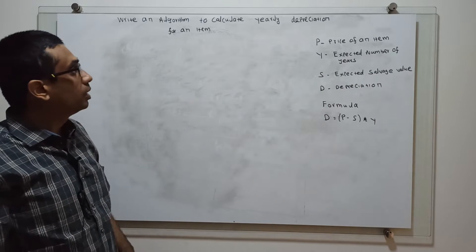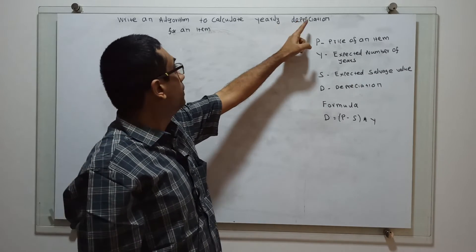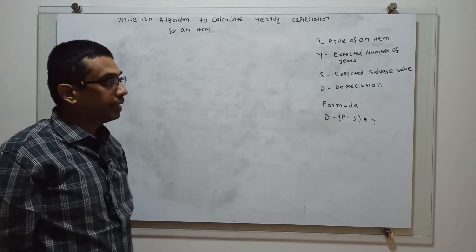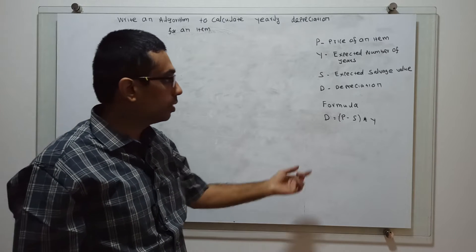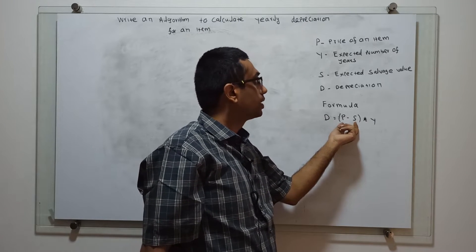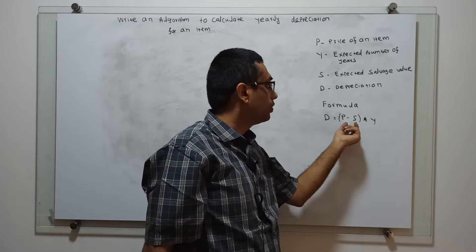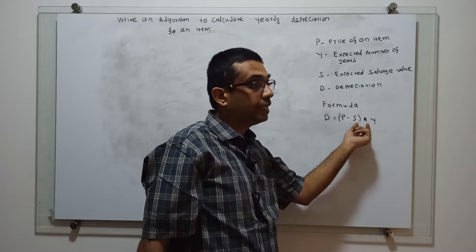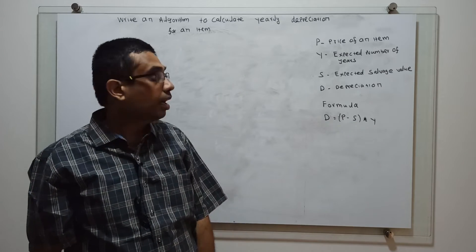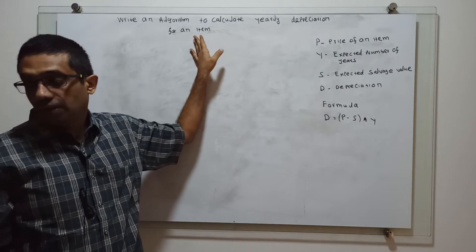We are going to write an algorithm to calculate yearly depreciation for an item. The formula is D equal to P minus S. P is the price of an item minus salvage value, into number of years. This is the formula to calculate the yearly depreciation for an item.